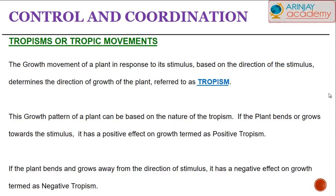Tropisms — this is the growth movement of a plant in response to a stimulus. It is based on the direction of the stimulus, and this decides which direction the growth of the plant will be. For example, if a plant is put in a lighted room with a bulb, the plant will have the tendency to grow towards that lighted bulb. If the plant bends or grows towards the stimulus, it is called a positive tropism. If the plant tends to bend and grow away from the stimulus, it is termed a negative tropism.